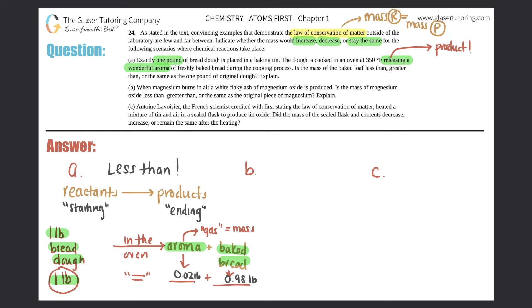Letter B. When magnesium burns in air, a white flaky ash of magnesium oxide is produced. Is the mass of magnesium oxide less than, greater than, or the same as the original piece of magnesium? We're going to do the same exact thing. Reactants has to go to your products. So your starting material has to end with the ending material. Here it says magnesium is burning in air. That means that magnesium had to react. Burning is a type of reaction.